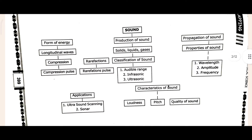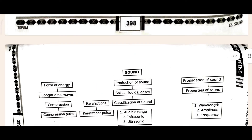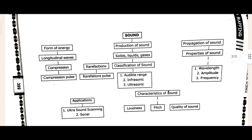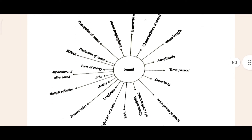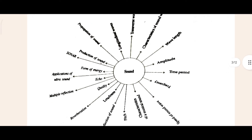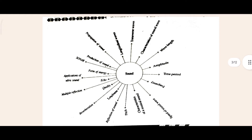Here you can see something given about sound — this is a mind mapping, which is very important for any chapter. If you want to write this mind mapping, you can write it before starting the chapter so you understand what we are going to learn. There is also another mind map here — don't be confused, I made it smaller so it's easier to understand. This is related to sound.